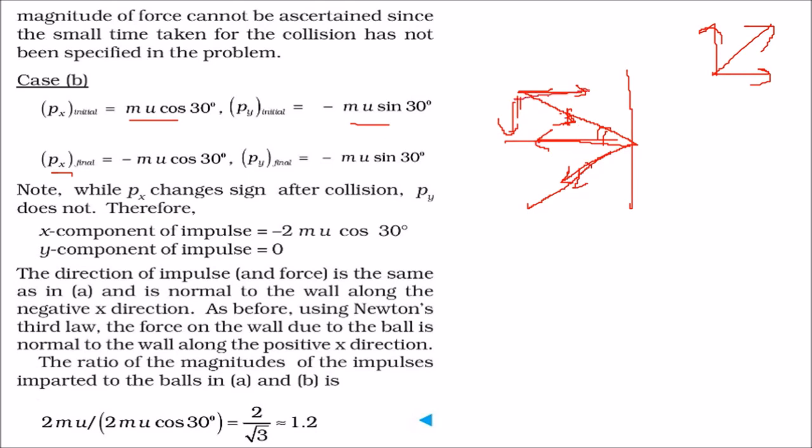it will be minus MU cos theta. But the y component remains the same for both of these. So, it will be minus MU sin theta and this will be minus MU sin theta. So, this px, the x component is changing sign after collision. See MU sin theta and this is minus MU sin theta. While this is not changing.